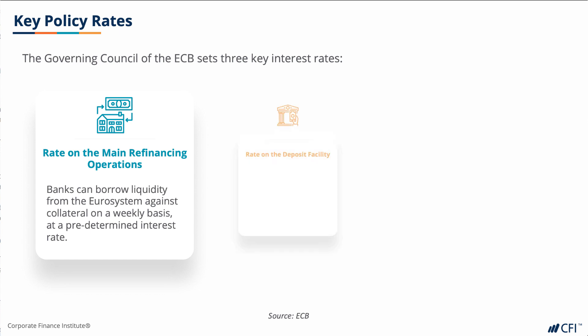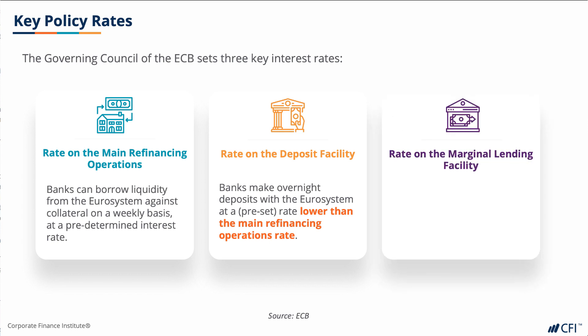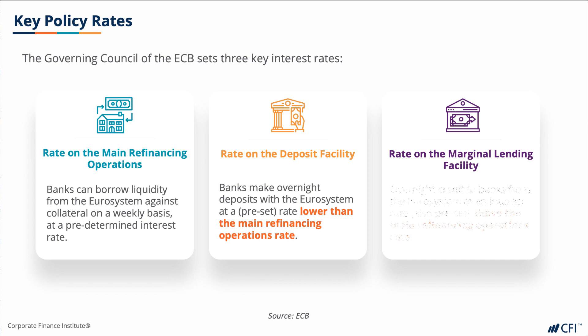The next rate is the rate on the deposit facility, which banks may use to make overnight deposits with the euro system. This is at a preset rate, and this rate is generally lower than the main refinancing operation rate. The last rate the Governing Council decides on is the rate on the marginal lending facility, which offers overnight credit to banks from the euro system at an interest rate above the main refinancing operations rate.